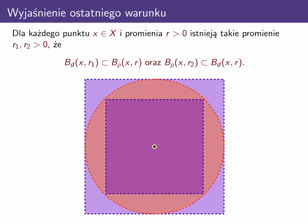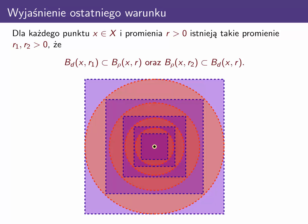Dana jest kula w metryce maksimum, czyli duży fioletowy kwadrat na rysunku. Warunek mówi, że w tej kuli zawiera się kula euklidesowa — pomarańczowe koło — o tym samym środku, lecz być może innym promieniu. Ponadto w każdej kuli w metryce euklidesowej zawiera się kula o tym samym środku w metryce maksimum — to jest ten mniejszy kwadrat fioletowy. Jak widać, możemy kontynuować tę czynność znajdowania kul względem kolejno metryki maksimum i euklidesowej w nieskończoność.